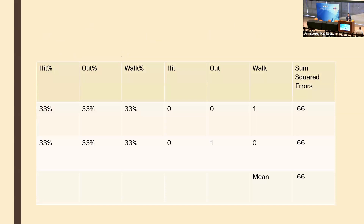Pretend we multiply the two matrices with X weight for the pitcher and 1-minus-X weight for the hitter, and we get a 33% chance of a hit, 33% chance of a walk, and 33% chance of an out. In reality we saw a walk occur — that means 33% wrong for the hit, 33% wrong for the out, and 66% wrong for the walk. When you square those numbers and sum them, you get 0.66.